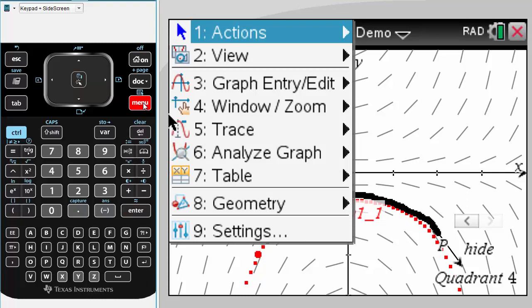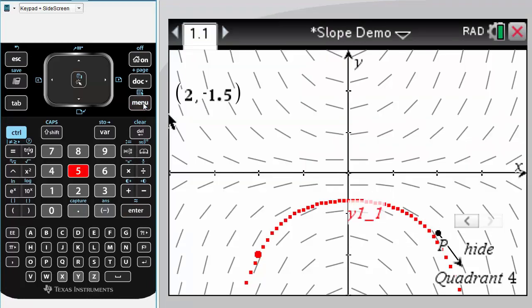So my trace wasn't too bad, but let's erase it. And there's the path of a point in that slope field.